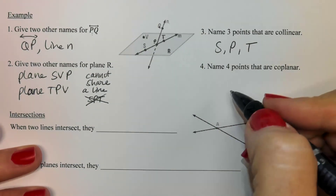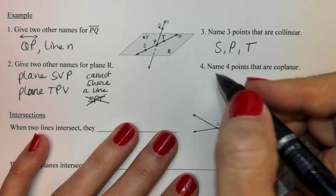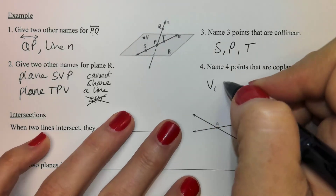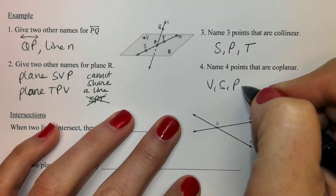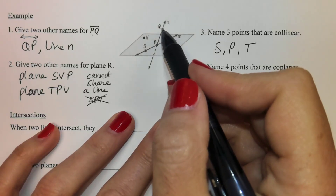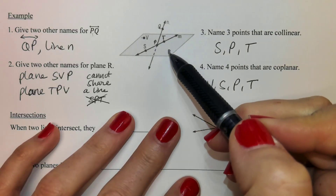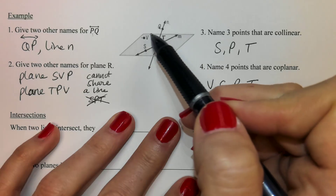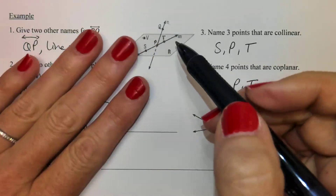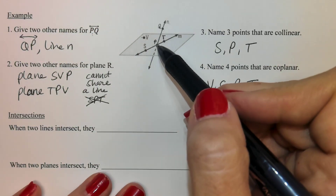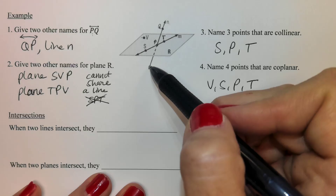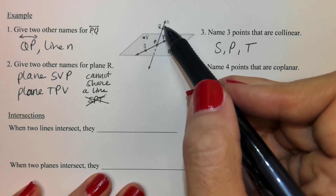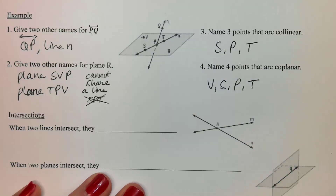Name four points that are coplanar. I just need points that lie on this plane: V, S, P, and T. The reason I can't pick Q is it's kind of up in the air. Everything on this gray plane is like on the sheet of paper, but Q is on a line shooting right through the piece of paper, so Q is not on that plane.